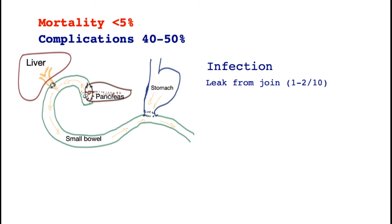There are joins between the bowel and the pancreas, between the bowel tube and the bowel, and between the stomach. The join between the small bowel and the pancreas may leak in one to two patients out of ten. The fluid tends to form a puddle, may become infected, and may become a source of bleeding.